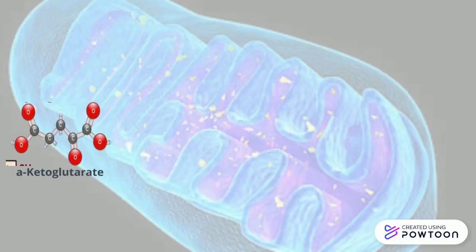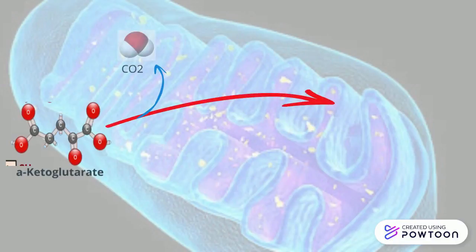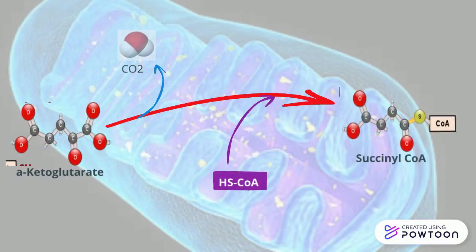Alpha-ketoglutarate will then release one molecule of carbon dioxide, and with the addition of one molecule of CoA, form succinyl-CoA. In the process, another NAD⁺ becomes NADH.